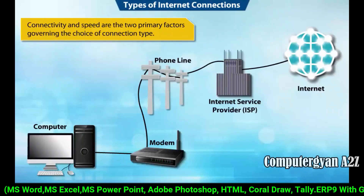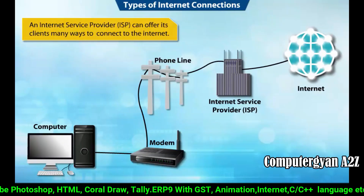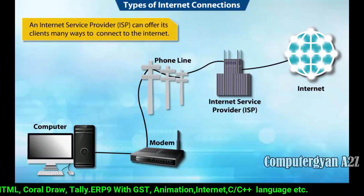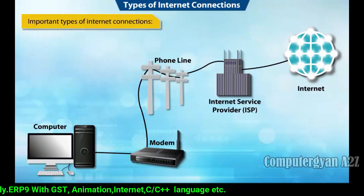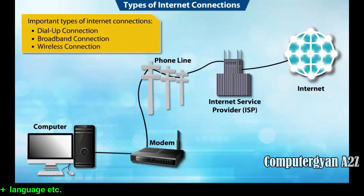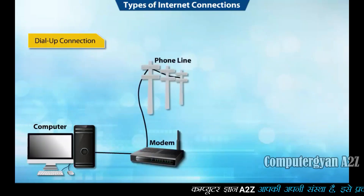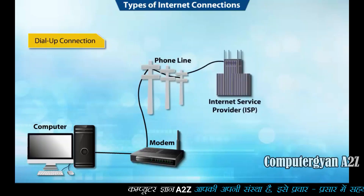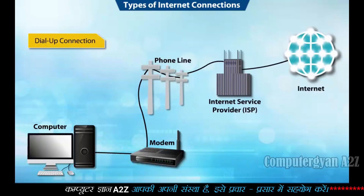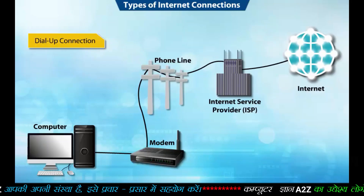Connectivity and speed are the two primary factors governing the choice of connection type. An Internet Service Provider (ISP) can offer its clients many ways to connect to the internet. A dial-up connection uses a phone line and a modem. The user must call the ISP access phone number each time to connect to the internet and cannot make or receive calls while connected. This connection is inexpensive but slow.